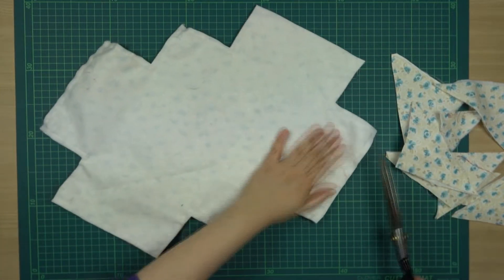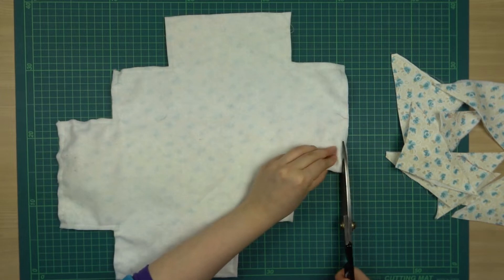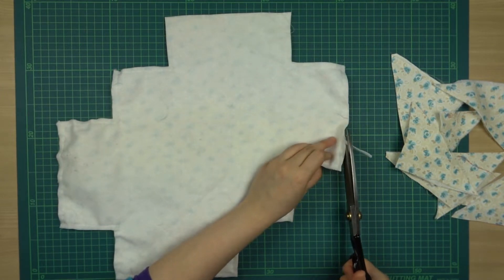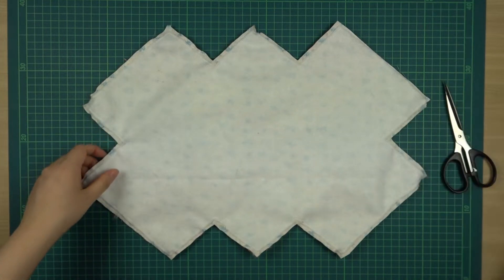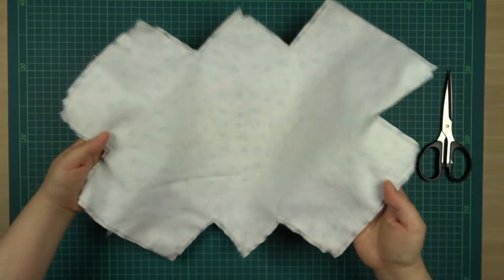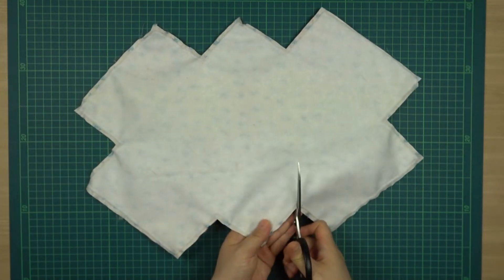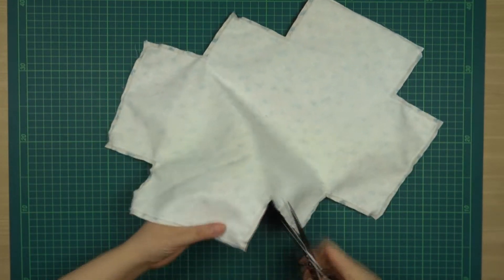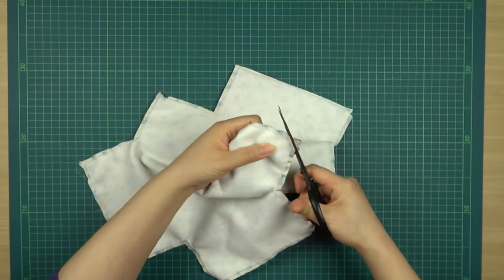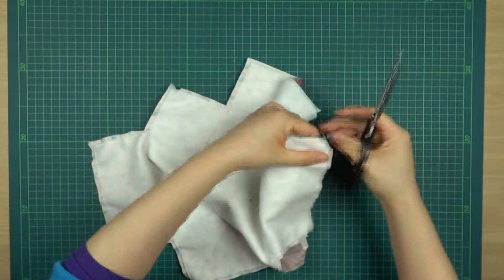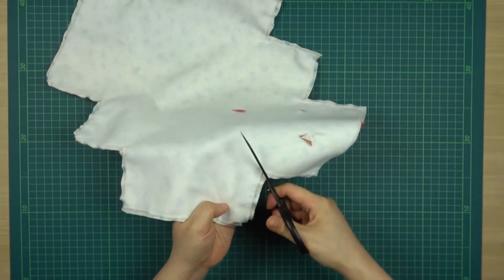Our next step is cut out the cotton bedding. As you see, I've already cut it out. And you just want to snip those corners, because this is going to make it easier when you turn it right side out.